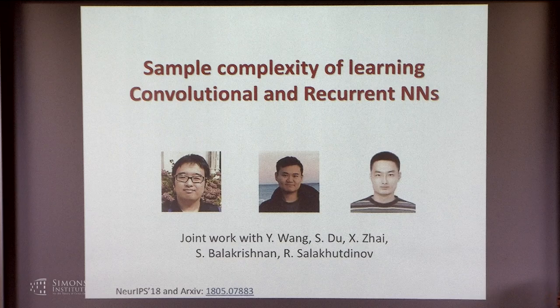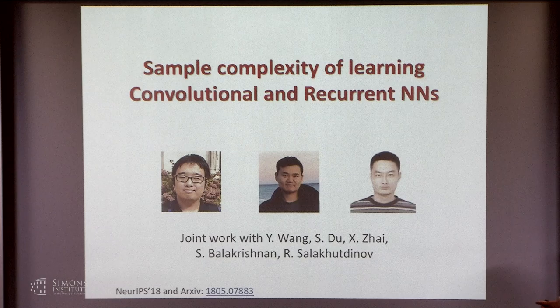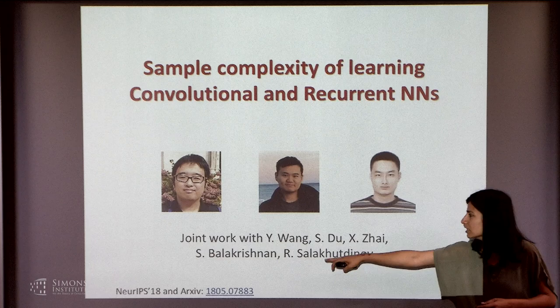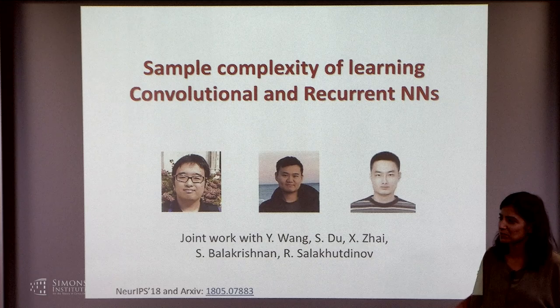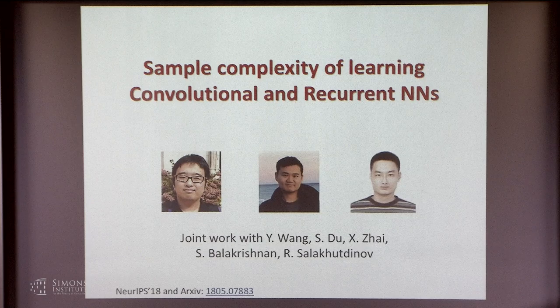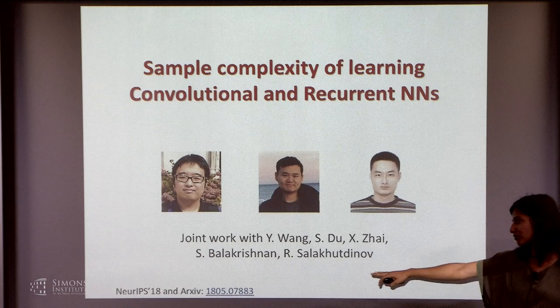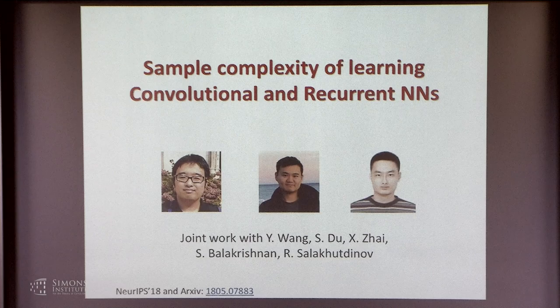I wanted to highlight the students who were part of this project. Yenning Wang and Simon Du are both my students, or were my students — they graduated recently and have moved on to do greater things. Jayu is at MIT, who was collaborating with them. And two of my colleagues, Siva and Russ, who are also part of the discussions. This work is from 2018, based on a paper that appears at NeurIPS '18. I know you saw Honey's talk on Monday, which was all May 2019 stuff, but I'll make connections to that and talk about new things in the archive. We've updated it recently to include some of the recurrent neural network results.